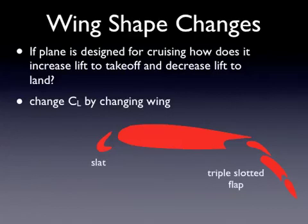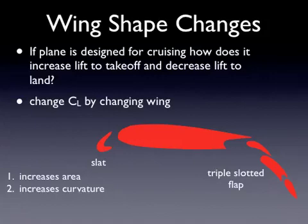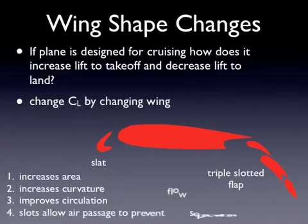Here's the profile for a standard airfoil in a commercial aircraft. During takeoff, the pilot is able to segment the wing through a series of motors into a different shape — these different pieces separate, changing the shape of the wing and the coefficient of lift. This design is called a triple slatted flap with a slat, and it has several impacts: it increases the area of the airfoil, increases the curvature of the airfoil (affecting the coefficient of lift), improves circulation on the wing, and these slots allow a little air to seep through, stabilizing the boundary layer and preventing flow separation. This reduces the likelihood that the wing is going to stall.